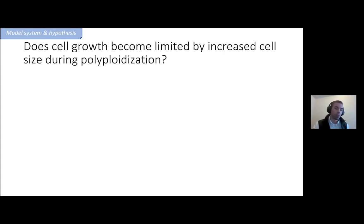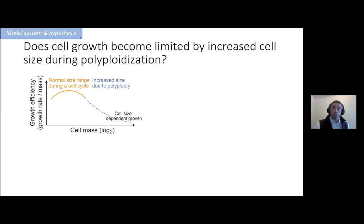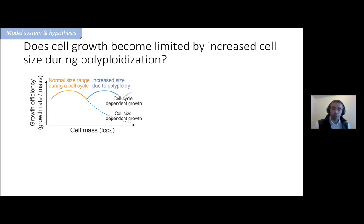To address whether this is size or cell cycle, we figured polyploidy could be the model to examine. A simple hypothesis: how does growth behave as cells grow into polyploidy? We've seen how growth efficiency normally scales with cell size within a normal cell cycle. But what if you induce polyploidy and the cell skips division, keeps growing, and enters a new cell cycle? Will you see cell size-dependent growth where growth rate declines on the same trajectory? Or will you see cell cycle-dependent growth where this non-linear behavior repeats itself in every cell cycle as cells grow in polyploidy?